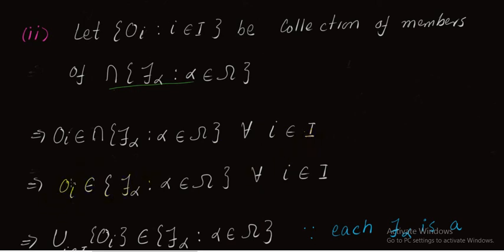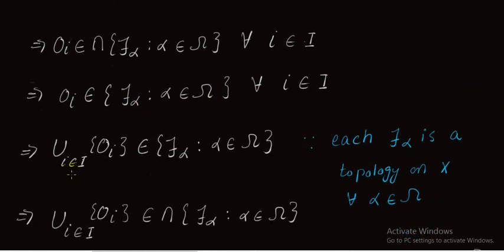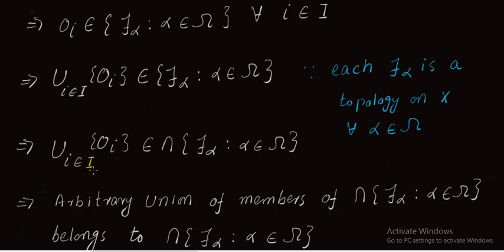We can write that Oᵢ belongs to each τ_α (α ∈ Ω) for all i in the indexing set. First we choose arbitrary elements from this intersection; then we can write that Oᵢ belongs to each τ_α (α ∈ Ω). From here we can write that the union over i in the indexing set of Oᵢ belongs to τ_α (α ∈ Ω), since each τ_α is a topology on X. So the union of members again belongs to each τ_α, which implies this union must belong to the intersection of these topologies.